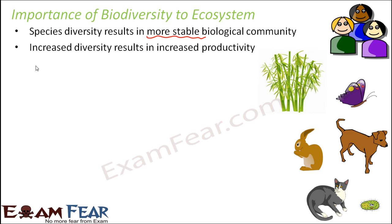Increased diversity results in increased productivity. Each species in our ecosystem has an important role to play. If any organism ceases to exist, it will affect the ecosystem and the entire balance. So if diversity exists, it will boost the productivity of that ecosystem. When your system is more stable, the productivity will naturally be more.